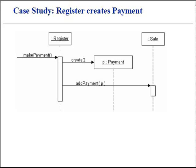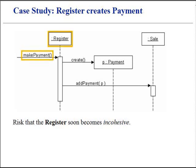In other words, there is a risk that the register soon becomes incohesive. Imagine that there are as many as 50 system operations, all received by the register object. If register did all the work related to each operation, it would become a bloated, incohesive object. The point is not that a single payment creation in itself makes the register incohesive, but in a larger picture of overall responsibility assignment, it may suggest the direction toward a low cohesion design.